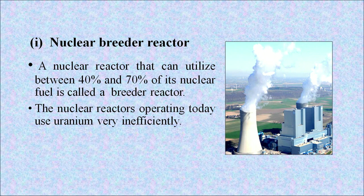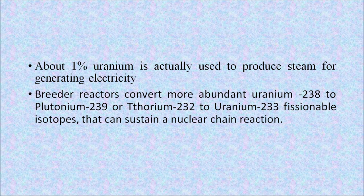A nuclear reactor that can utilize between 40% and 70% of its nuclear fuel is called a breeder reactor. The nuclear reactors operating today use uranium very inefficiently — about 1% of uranium is actually used to produce steam for generating electricity. Breeder reactors convert more abundant uranium-238 to plutonium-239, or thorium-232 to uranium-233, which are fissionable isotopes that can sustain a nuclear chain reaction.